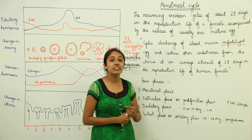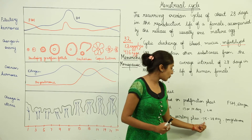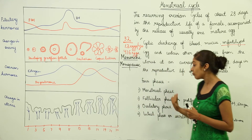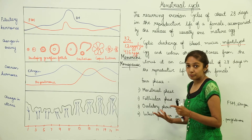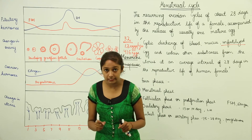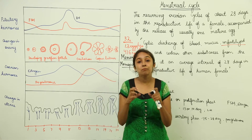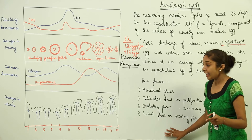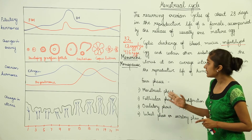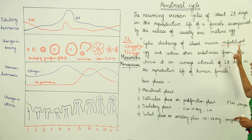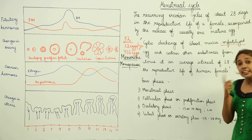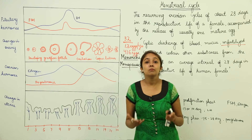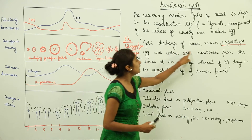The fourth phase is the luteal phase or secretory phase, lasting from day 15 to 28. During this stage, the hormone progesterone is released. If the egg is fertilized, the embryo implants in the uterine wall. But if the egg remains unfertilized, the menstrual phase begins again — cyclic discharge of blood, mucus, unfertilized egg, and other substances — because the thickened endometrium lining breaks down along with blood vessels.